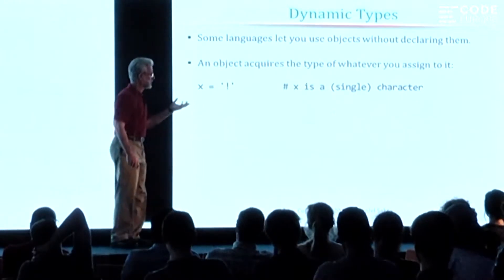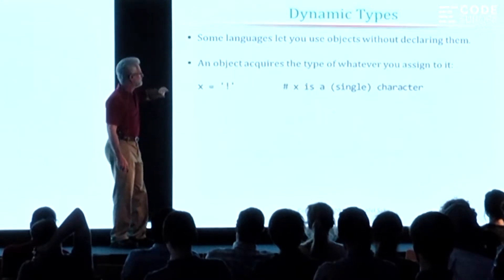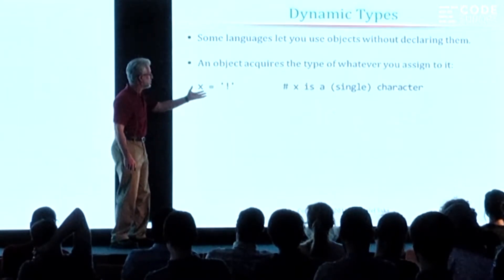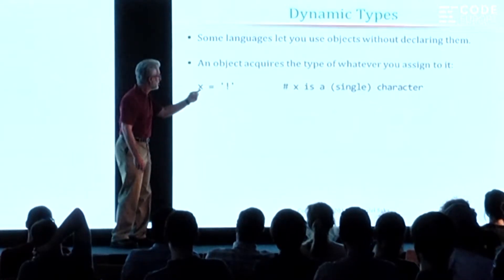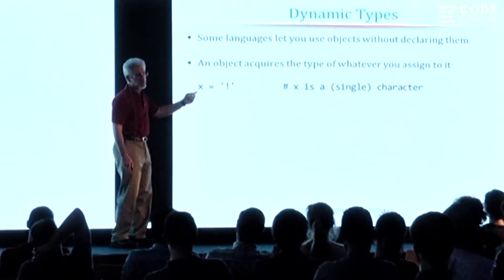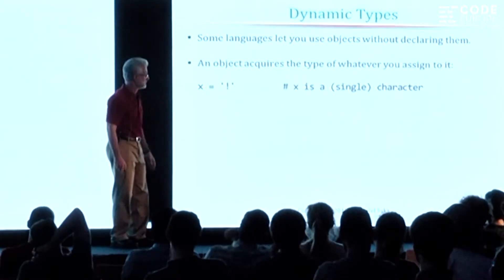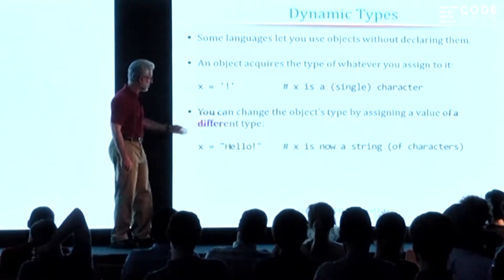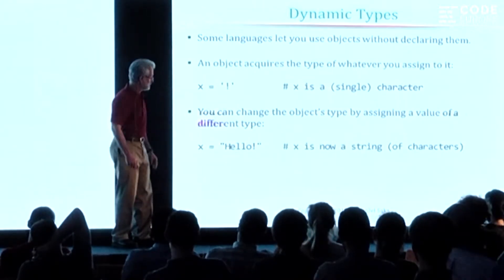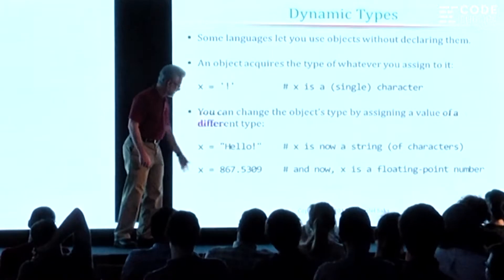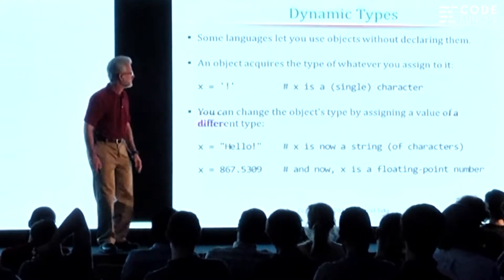There are some programming languages that don't require that you declare objects before you use them. What happens is you just do an assignment and that assignment determines the type of that thing at runtime. So you assign a character to it, X is a character. Later on, you can assign a string to it and now X is a string. And then later on you assign a floating point number to it and now X is a floating point. It's a dynamic type system.